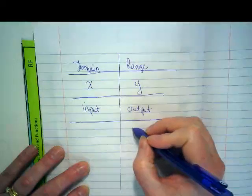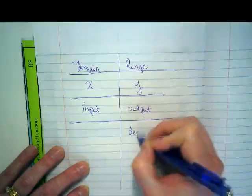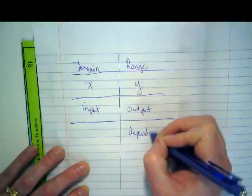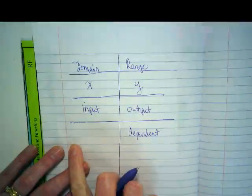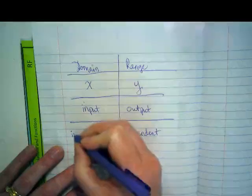Our range is always the dependent one. The range depends on the domain, so that makes this the independent.